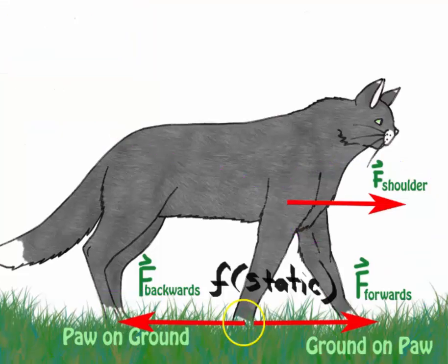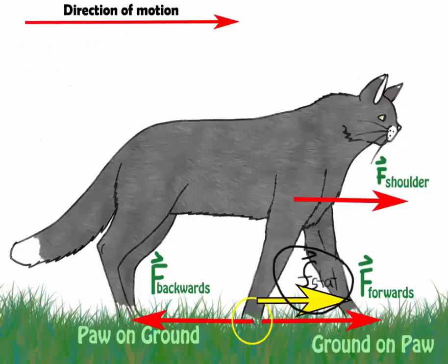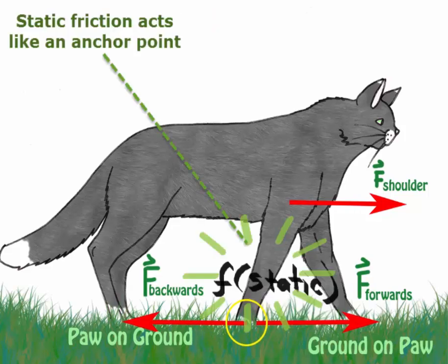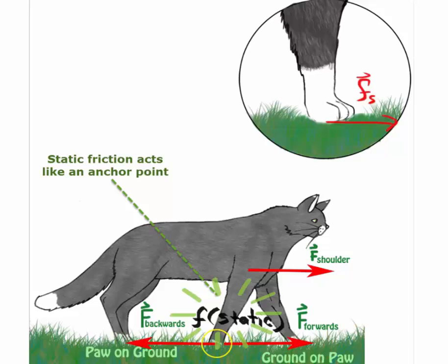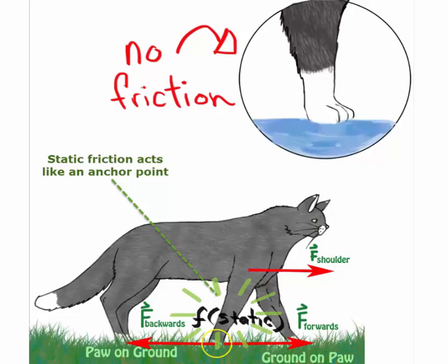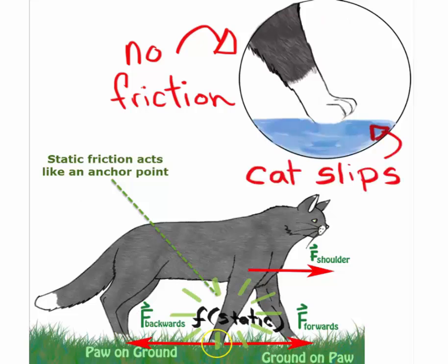Walking wouldn't be possible without static friction. From our free body diagram, friction is in the direction of motion. You might recall that in previous friction videos, static friction opposes your motion when you try to move an object. This is true, but in this case the static friction isn't opposing your motion, nor is it helping your motion — it's simply an anchor point. If we didn't have the static friction, it would be difficult to walk, more like walking on ice, with the cat flipping because there is no anchor point and no support.